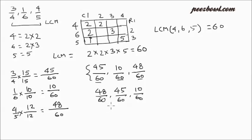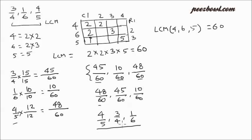So this is the order. 48 upon 60 is nothing but 4 upon 5. So 4 upon 5 has the highest value, 2nd is 3 upon 4, and 3rd is 1 upon 6. This is the order of fractions based on their value — the highest fraction value comes first, then the 2nd, and finally the least fraction value: 4 upon 5, 3 upon 4, and 1 upon 6.